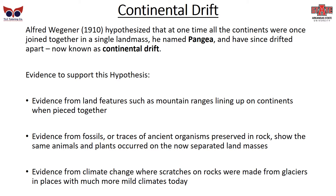Alfred Wegener hypothesized that all the continents were once joined together in a single landmass that he named Pangaea, and have since drifted apart — now known as continental drift. Evidence supporting this hypothesis includes land features such as mountain ranges lining up on continents when pieced together, with the most obvious example being how South America fits up against Africa. Evidence from fossils shows the same animals and plants occurred in now-separated land masses. Evidence from climate change includes scratches on rocks made by glaciers in places with much milder climates today.